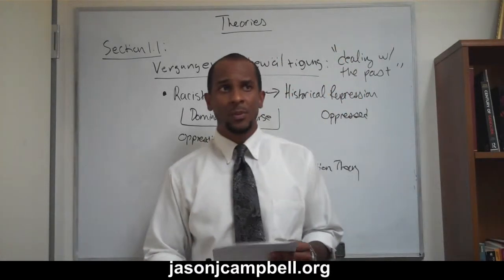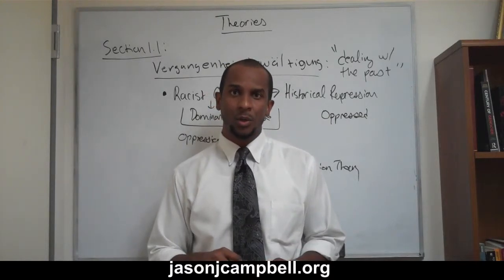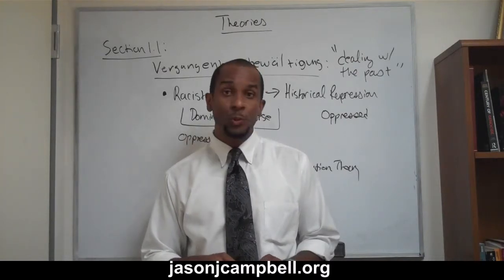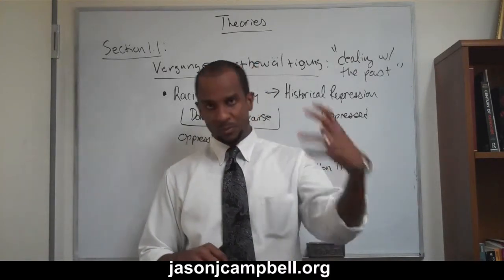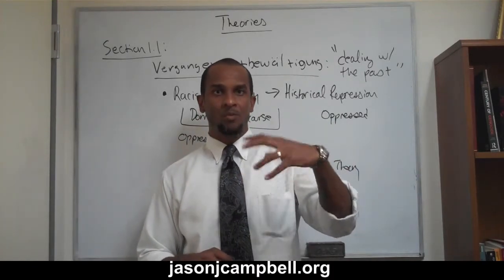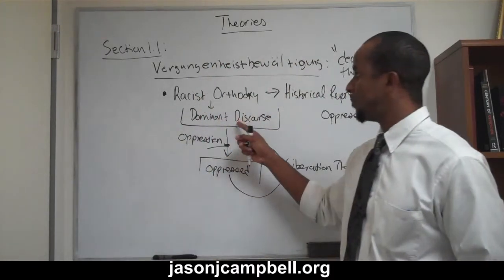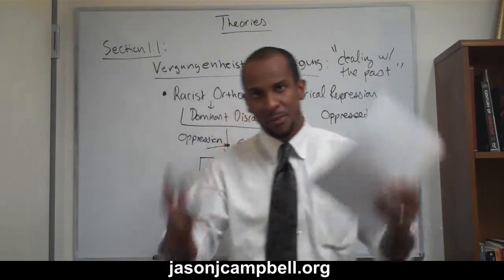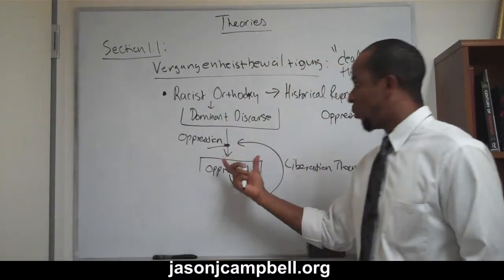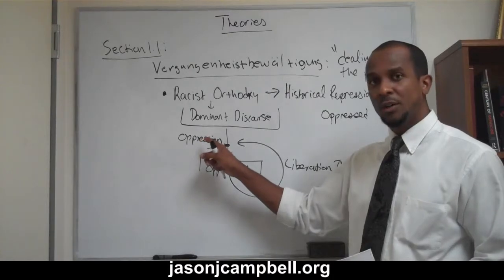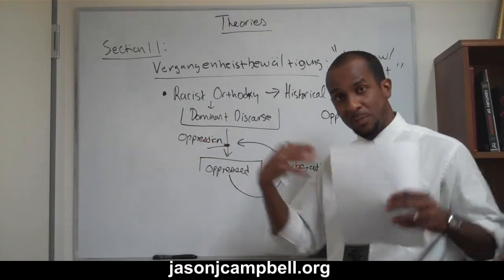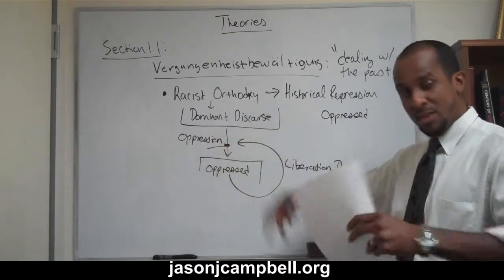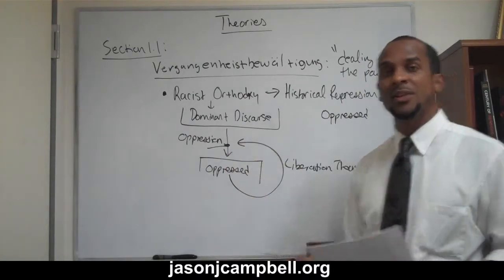For example, there was the belief that African Americans were inherently violent, that African Americans were inherently stupid. So if the oppressed people we're looking at are African Americans, they recognize that this dominant discourse is in place to oppress them — that African Americans are ignorant, stupid, lazy. Once we recognize the function of the dominant discourse, it's the obligation of the oppressed people to create a counter-narrative, this liberation theory, and thus liberate themselves from the confines of that discourse.